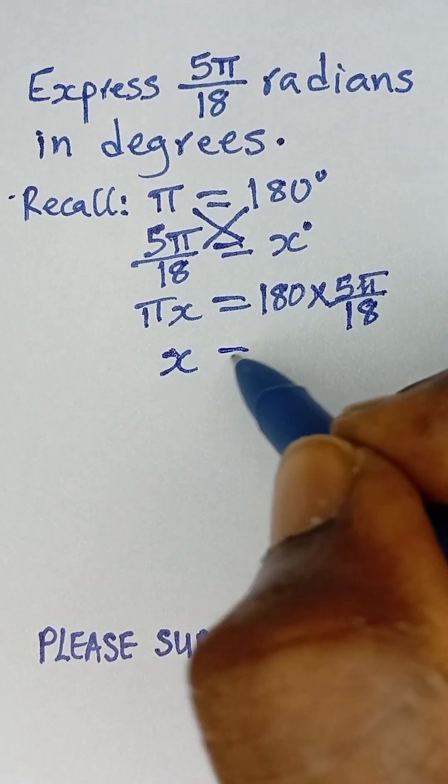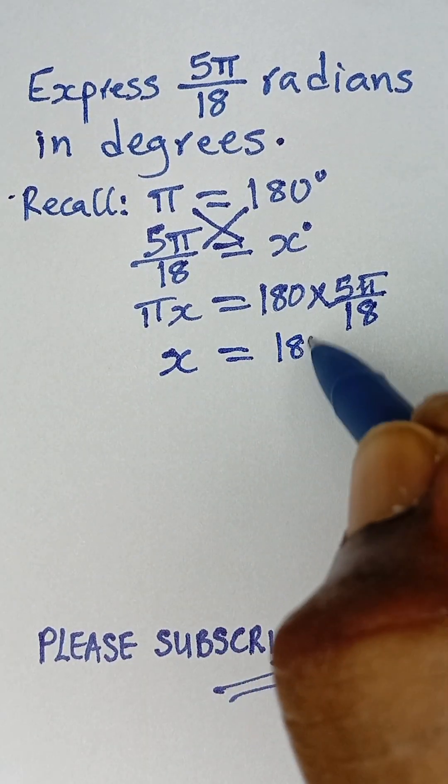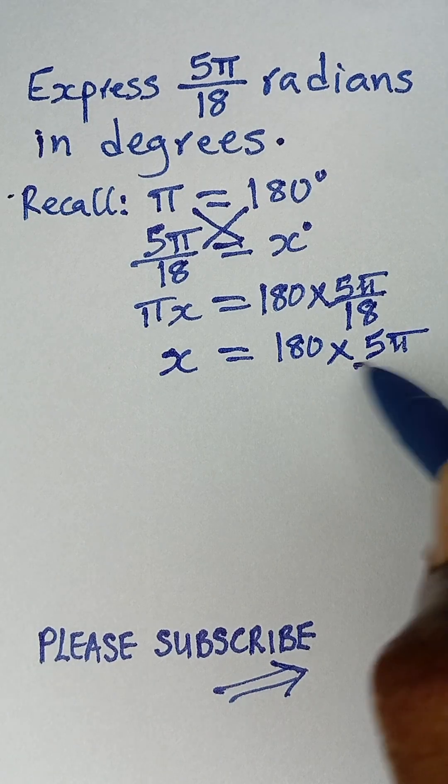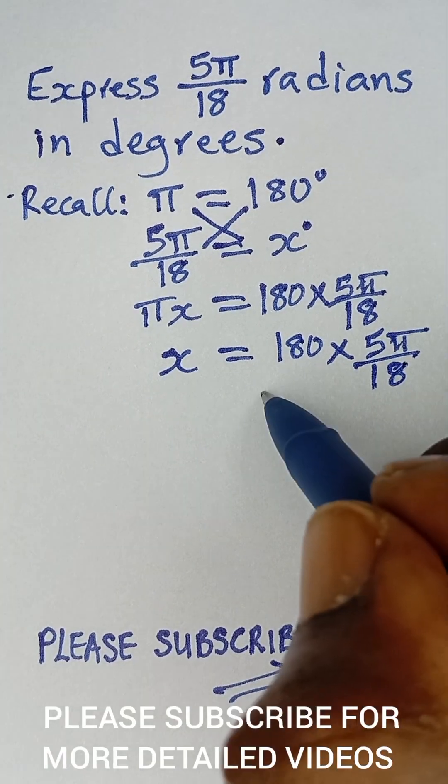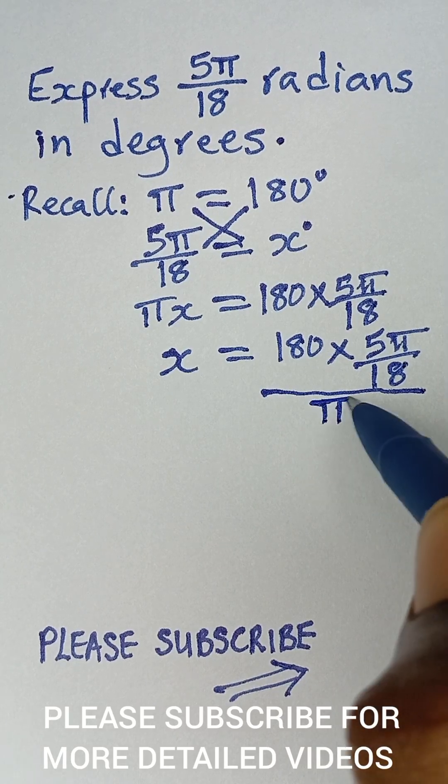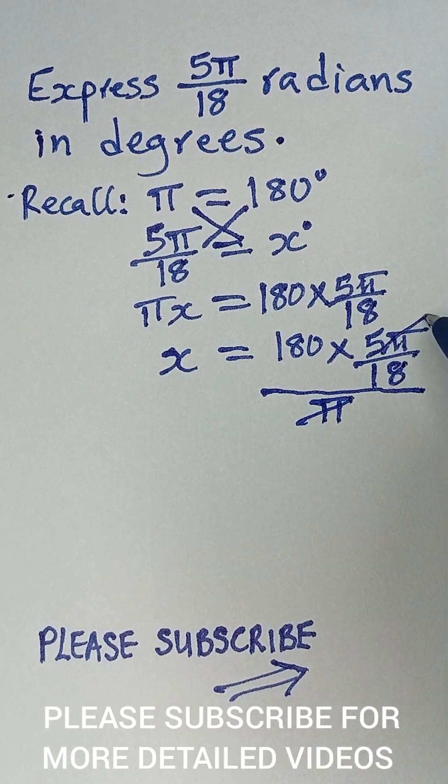So we are left with x equals 180 multiplied by 5π over 18, all divided by π. Pi cancels with π here.